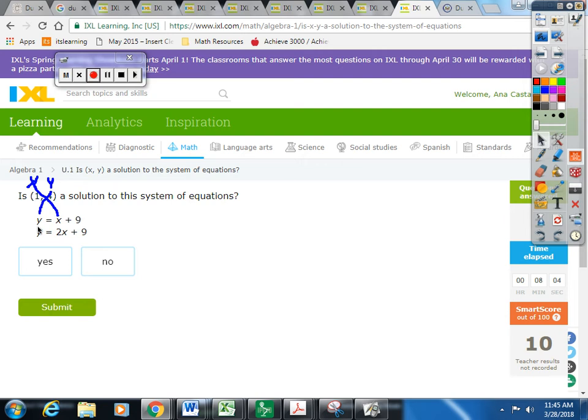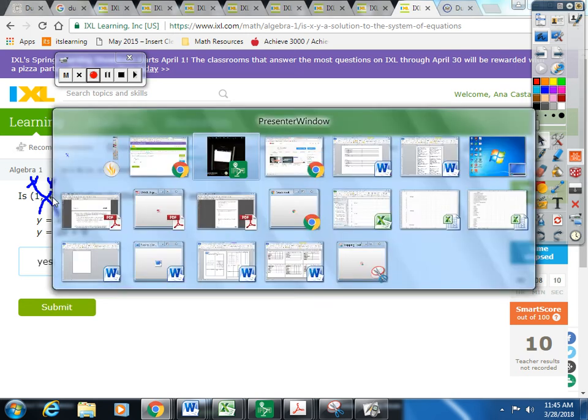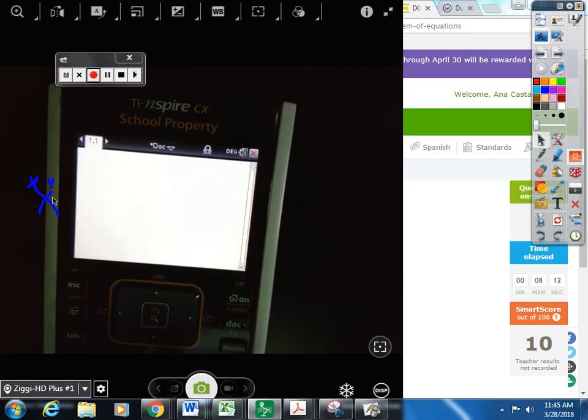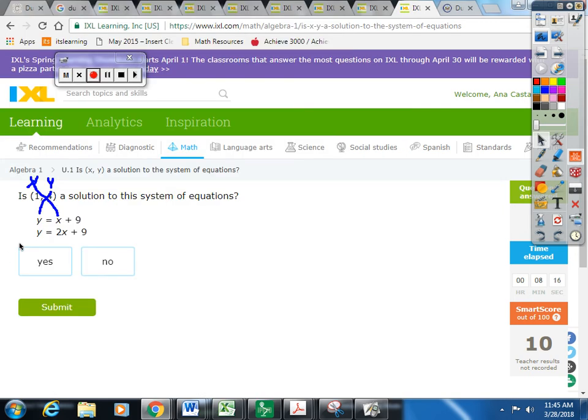And so, what I'm going to do is I'm going to type this in here. So, first starting with Y. Do I put in Y? No. I put the number. Which one's my Y value? Four. Four.